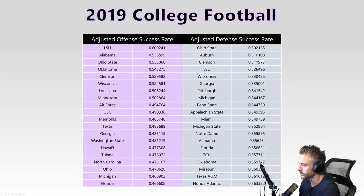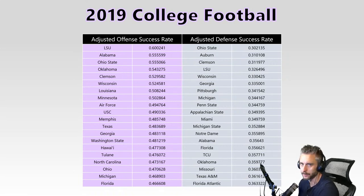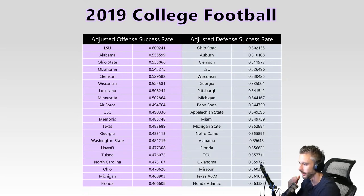On the defensive side, a high defensive success rate means forcing three-and-outs and preventing nickel-and-diming. Teams like TCU are very good at this, but what they expose themselves to in return is the big play. That's the trade-off with bend-don't-break versus aggressive defenses.